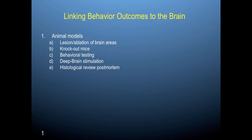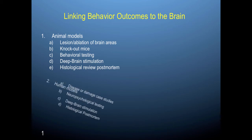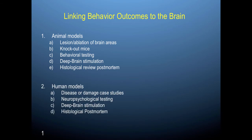Human models largely correspond to animal models. We have disease or damage case studies, looking at how people with brain damage perform differently or how they present with diseases such as Parkinson's. We also have neuropsychological testing — very controlled tests designed to assess an individual's ability to engage in basic executive functions such as memory, ordering events, keeping on task, and verbal fluency. And as mentioned, there is also deep brain stimulation.